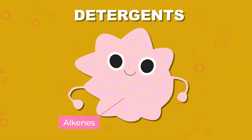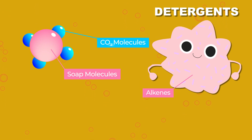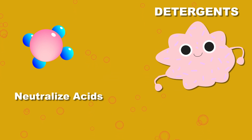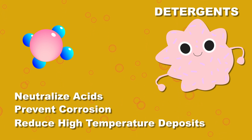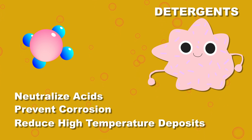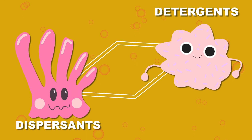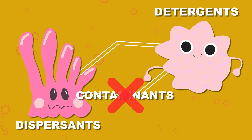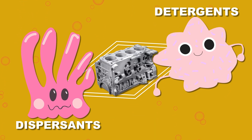Detergents are alkenes containing soap molecules that have been oversaturated with CO2 to neutralize the acids formed from combustion, prevent metal corrosion, and reduce high temperature deposits on pistons. They work in tandem with dispersants to ensure that any contaminants in your engine are swept away when you do your next oil change, and that your engine stays clean throughout its regular use.